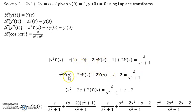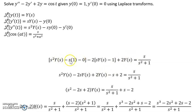Collecting Y(s) terms: s²Y(s) minus 2sY(s) comes from the y'' and y' terms, and plus 2Y(s) from the 2y term. Then we have negative s from the initial condition terms.